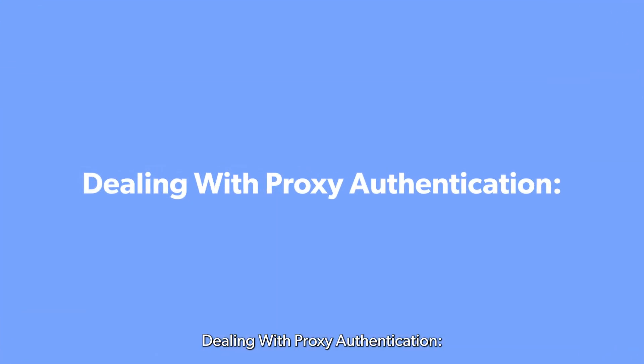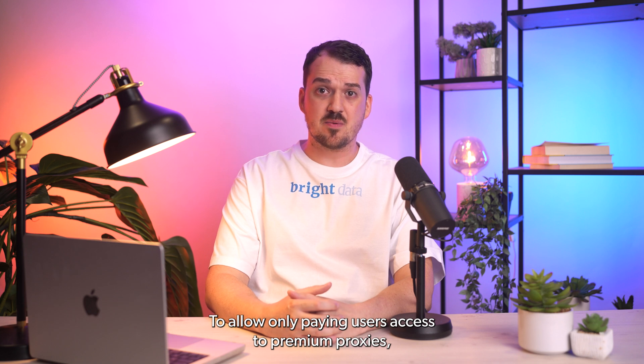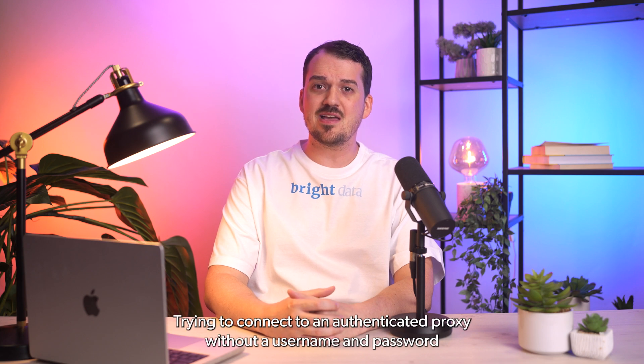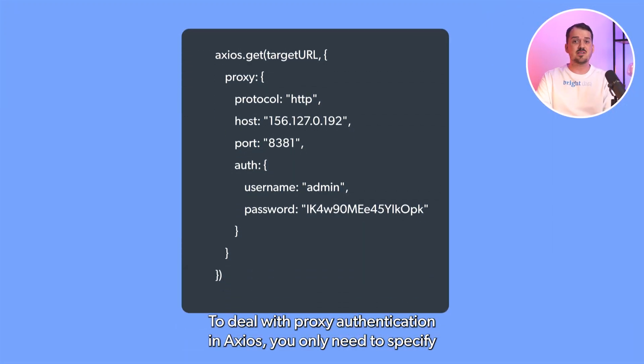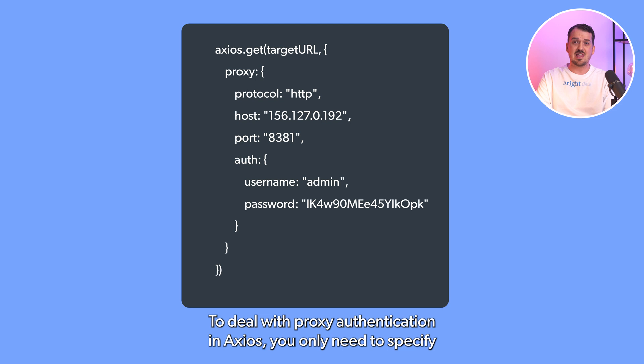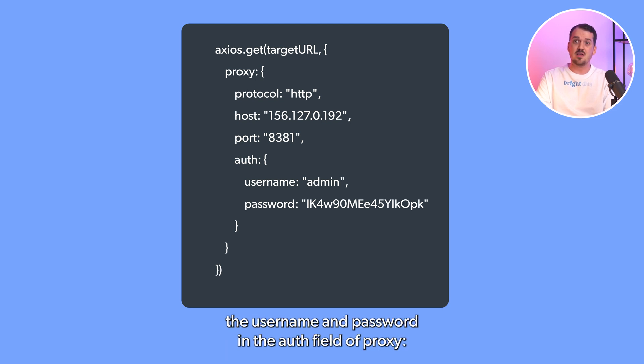Dealing with proxy authentication. To allow only paying users access to premium proxies, proxy providers protect them with authentication. Trying to connect to an authenticated proxy without a username and password will result in a 407 Proxy Authentication Required error. To deal with proxy authentication in Axios, you only need to specify the username and password in the auth field of the proxy config.